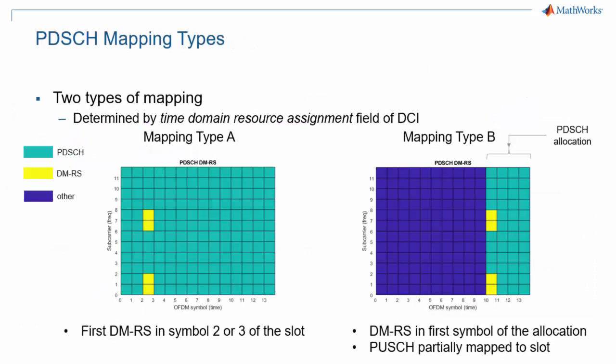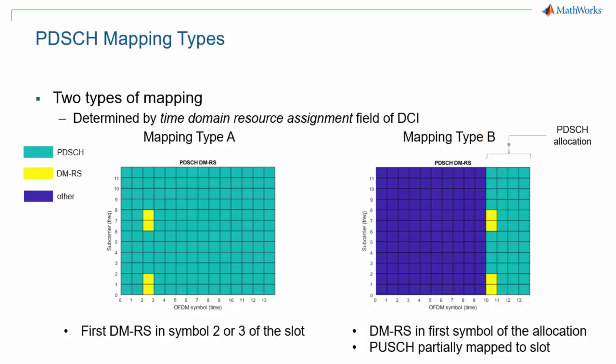A PDSCH slot allocation may start at the beginning of a slot or midway through a slot, corresponding to two different mapping types: type A and type B. Strictly speaking, the PDSCH mapping type only affects the location of the demodulation reference signals. For mapping type A, DMRS are in symbol 2 or 3 of a slot, while for mapping type B, DMRS are in the first symbol of the PDSCH allocation. Both mapping types support full and partial slot allocation, but mapping type B is preferred for partial slot allocation — especially for transmissions not starting at the beginning of a slot — as having DMRS at the beginning of the allocation reduces processing latency, which is critical for low-latency communications.